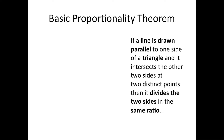We're going to cover the Basic Proportionality Theorem. This theorem states that if a line is drawn parallel to one side of a triangle and it intersects the other two sides at two distinct points, then it divides the two sides in the same ratio. The main points are: you need a triangle, and there has to be a line parallel to one of the sides of the triangle.